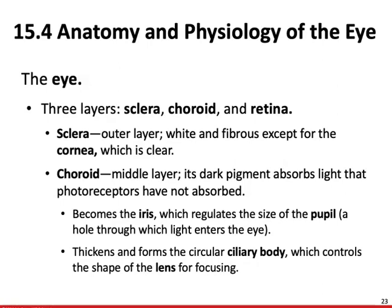The sclera is going to be the white part of the eye. That's the tough outer white region that ultimately provides the shape and protection to the eyeball. It's going to serve as the site for muscle attachment, which is what allows you to look left and right and roll your eyes.